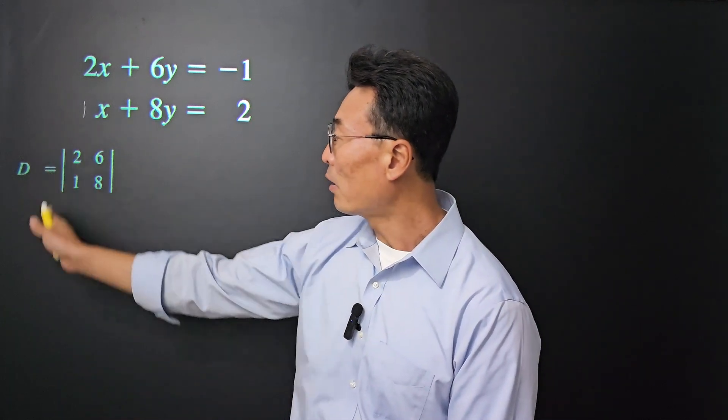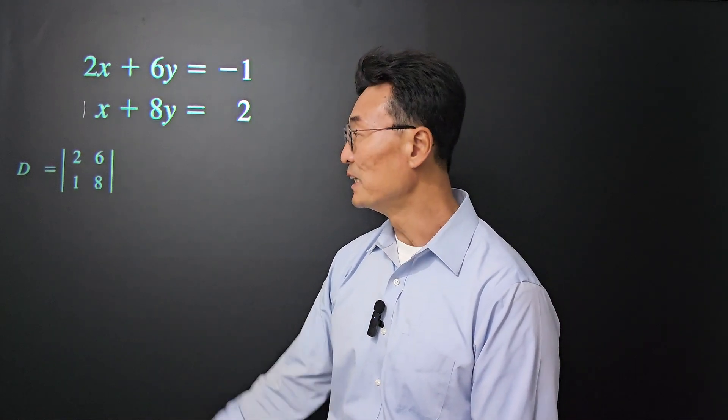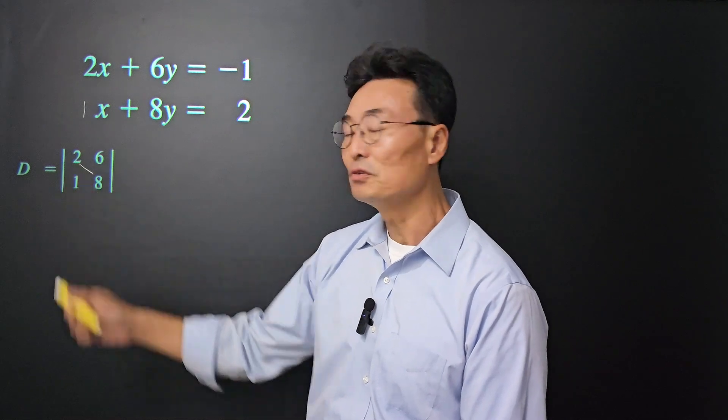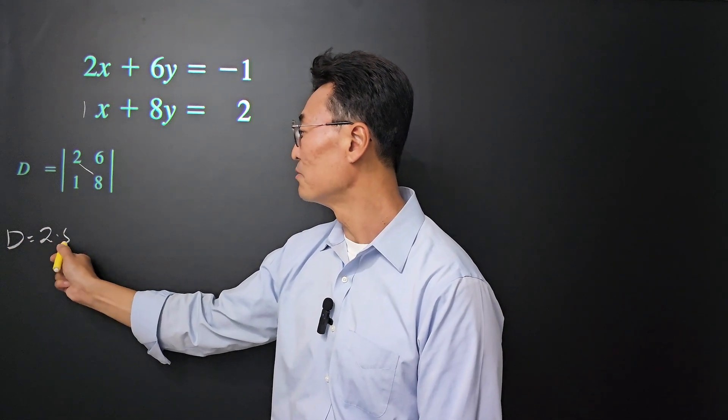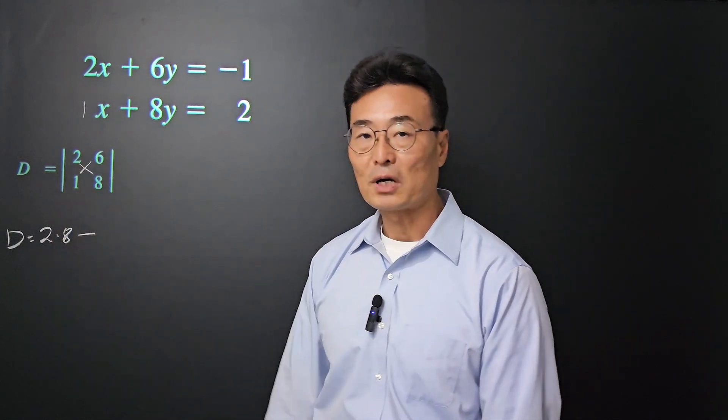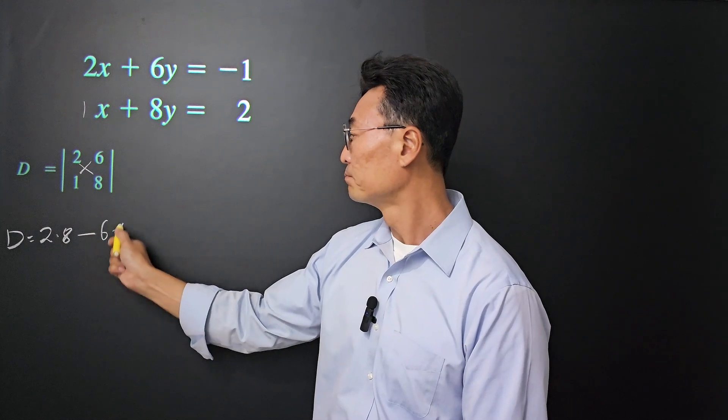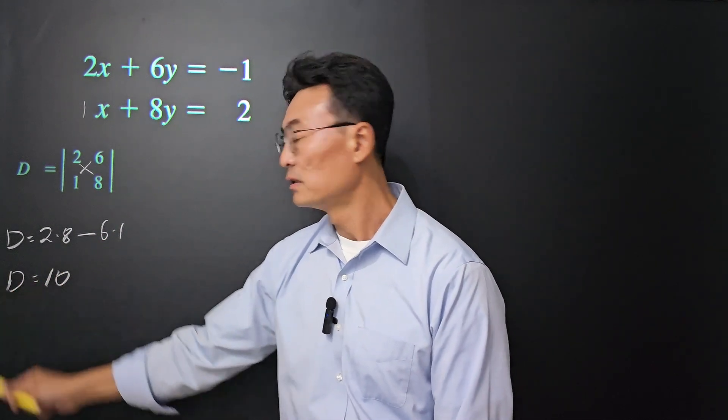The bars on the left and right represent the determinant of the matrix. We take 2 multiplied by 8, so D equals 2 times 8 minus the other cross, or 6 times 1. If you do this, we get D equals 10.